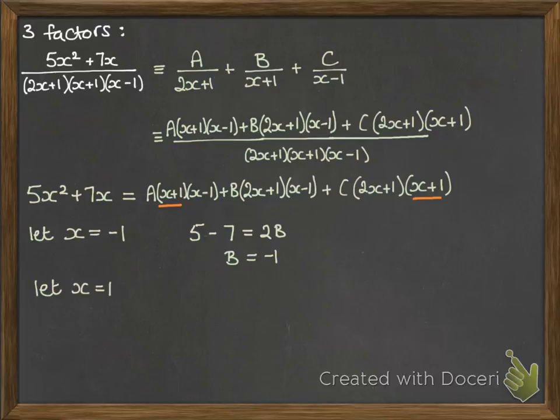Then if we substitute in another value we've got x equals 1. That helps us to zero out those two brackets and work out what we've got and we get an answer for C.